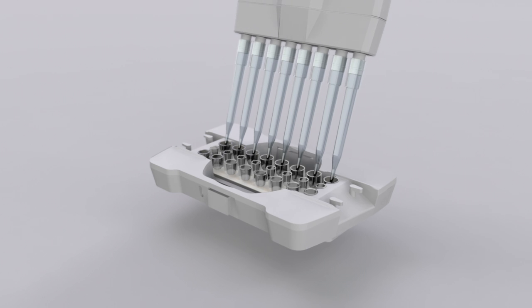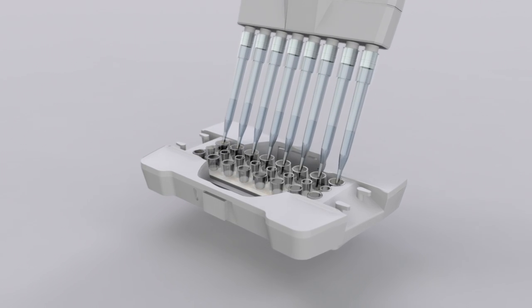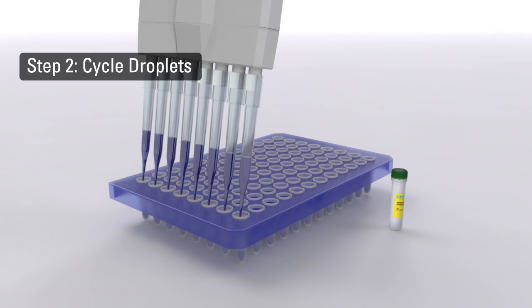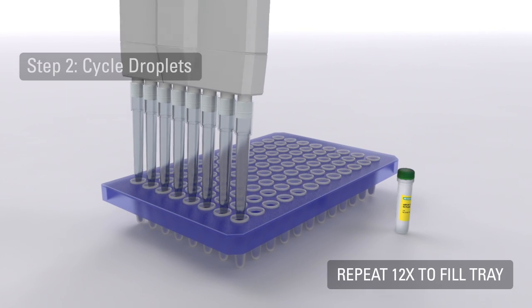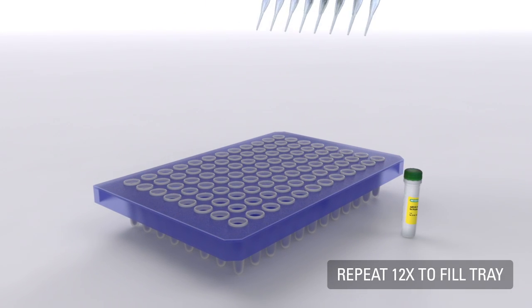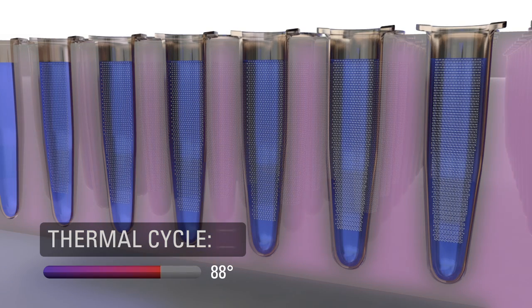After the droplets are generated, the emulsified samples are transferred to a standard 96-well PCR plate using a standard 8-channel pipette. The plate is then loaded onto a thermal cycler where PCR is performed to amplify the target DNA to endpoint.